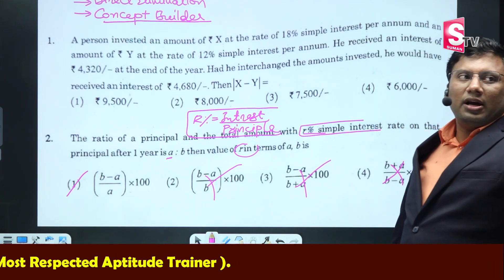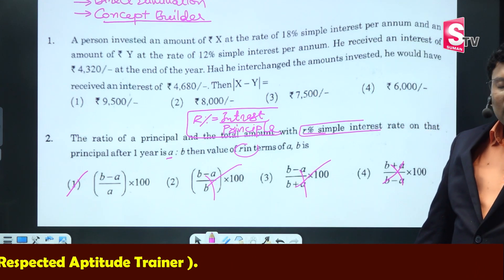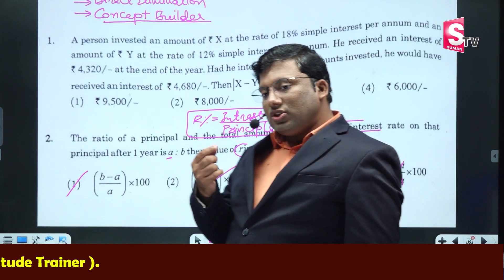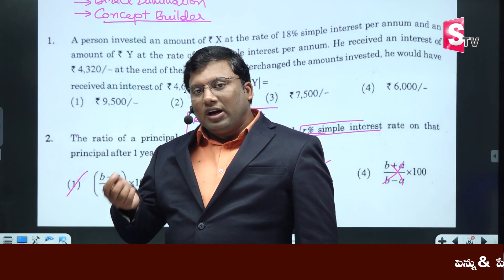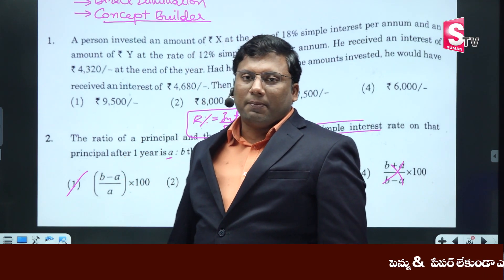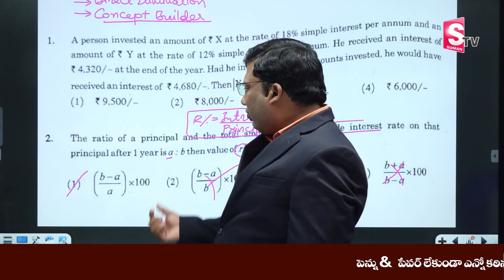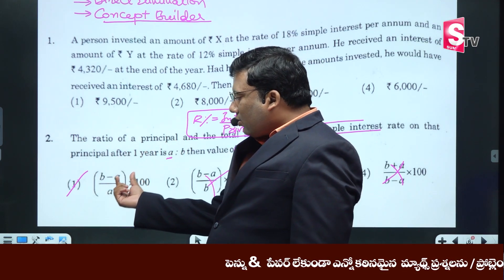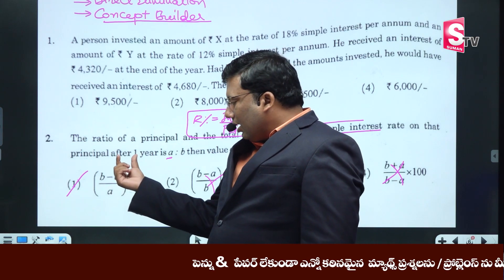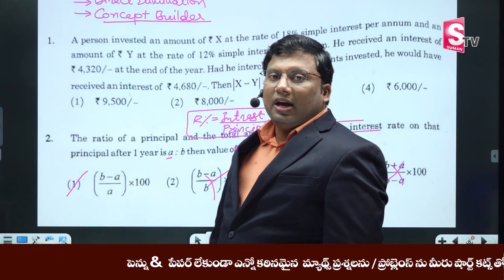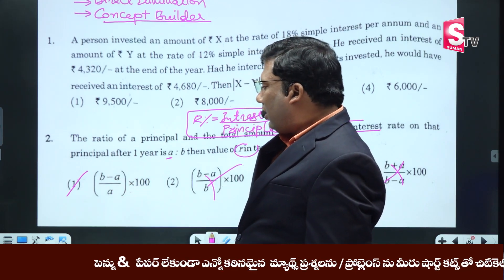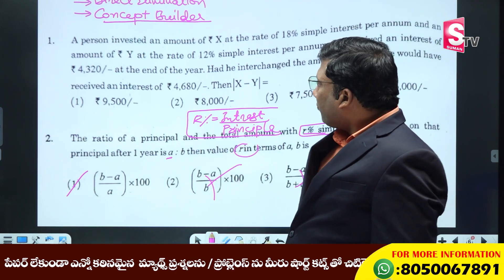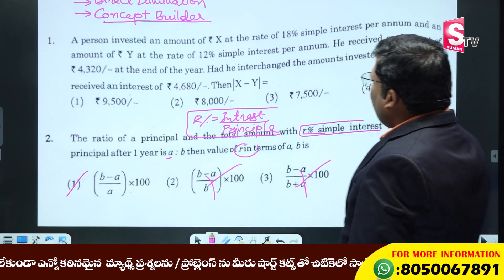Choose B minus A by A into 100 — that is the formula with R percentage. So B minus A by A into 100. It comes out to the answer.